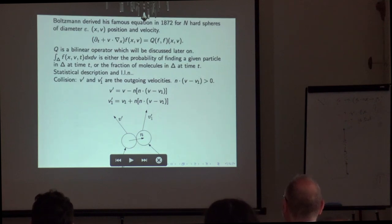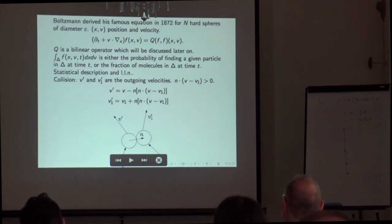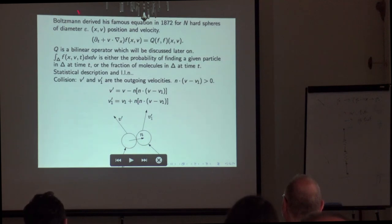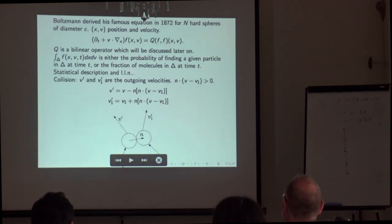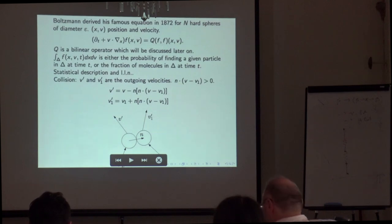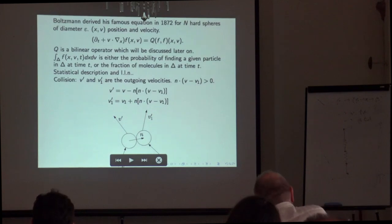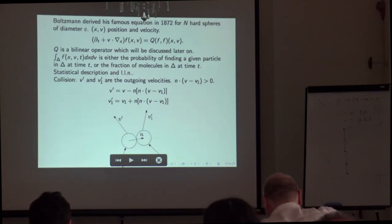Historically, this idea is due to Boltzmann, who wrote his famous equation many years ago, and still now we are not able to justify it fully from a mathematical point of view. The Boltzmann equation has the formula where f(x,v) is the probability distribution of a single particle with position x and velocity v. The evolution equation — the Boltzmann equation — has a free streaming operator and a collision operator taking into account interactions between particles. We assume particles interact via a two-body potential and, to simplify as Boltzmann did, we assume they are hard spheres.